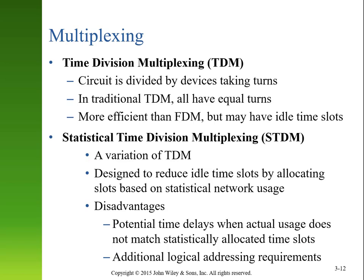An alternative to frequency division multiplexing is time division multiplexing, where we use the entire circuit for multiple devices but give each device all of the frequency for some amount of time. Everybody has an equal turn — imagine going around a classroom round robin where each student has a minute to present. In the computer world, these time divisions would be in the milliseconds or nanoseconds. It's more efficient because all your frequency is dedicated towards broadcasting, with no guard bands, but you might have idle time slots if a device has nothing to communicate.